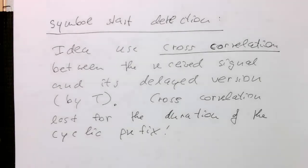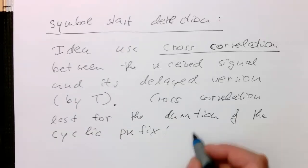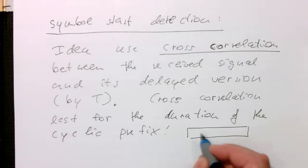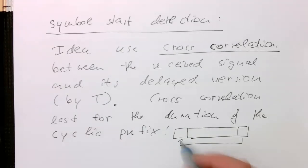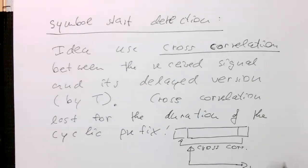Very simple. If we do that, then imagine here, this is here again our symbol. And this is here our cyclic prefix, the copy to here. Then, if we have here, and the samples, and this is our cross-correlation, then this will look like this, that this will go up and up and up and then down again.